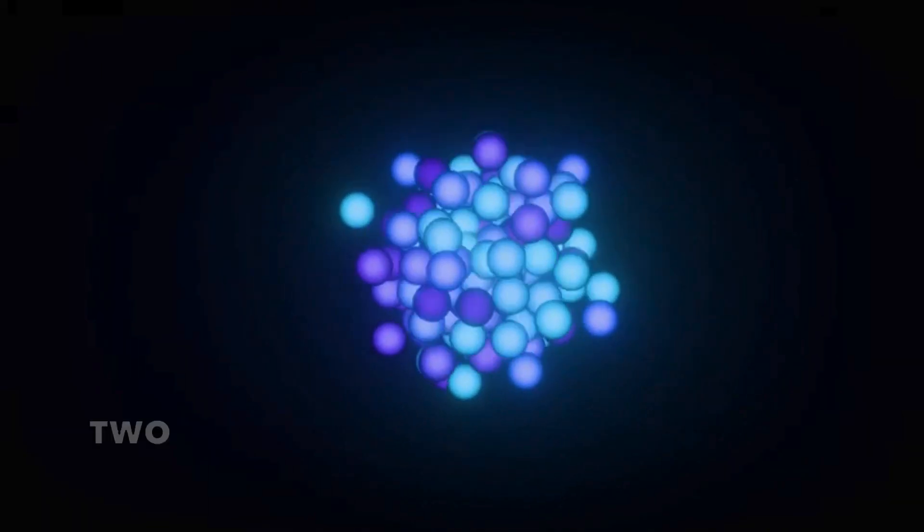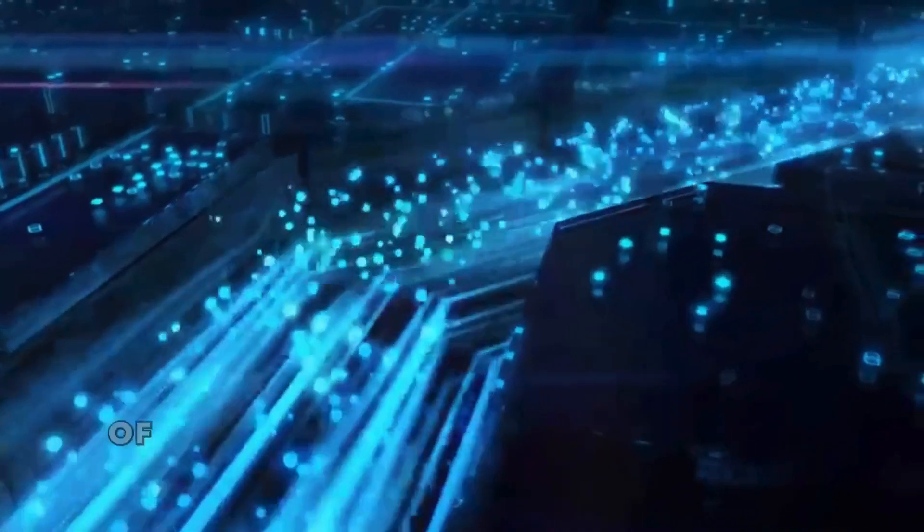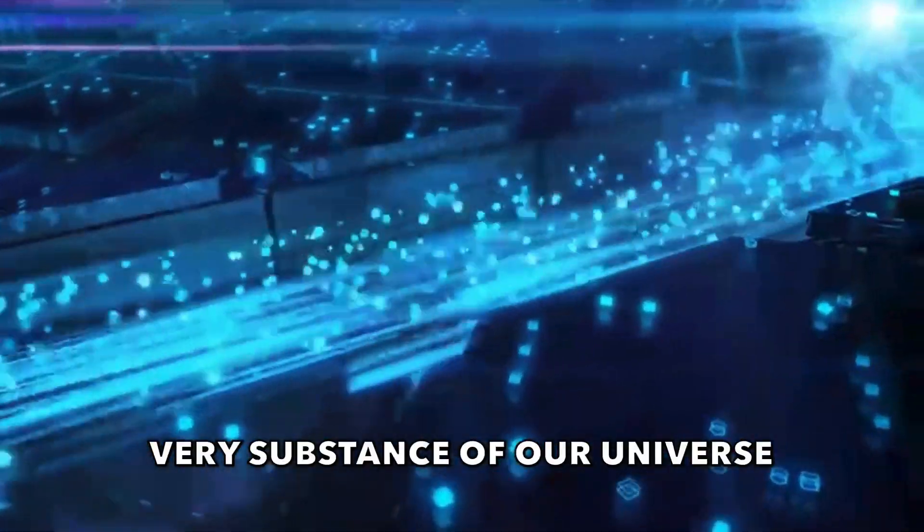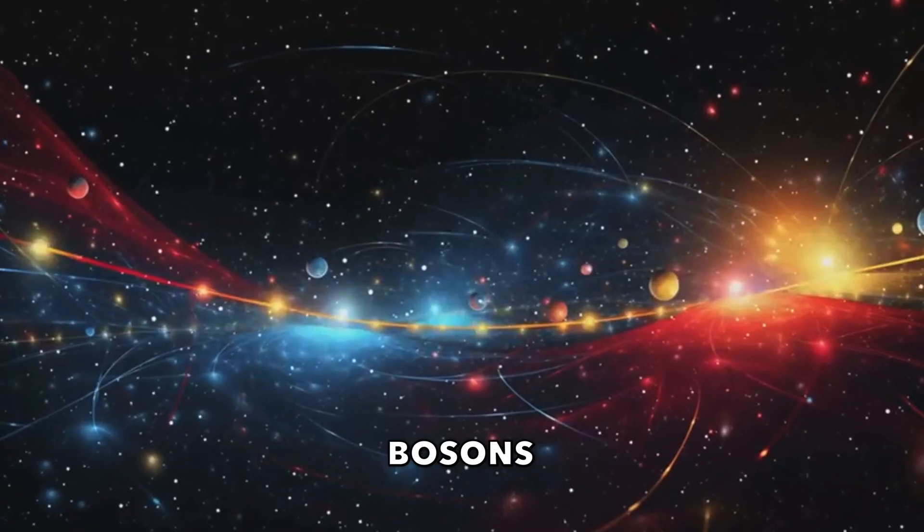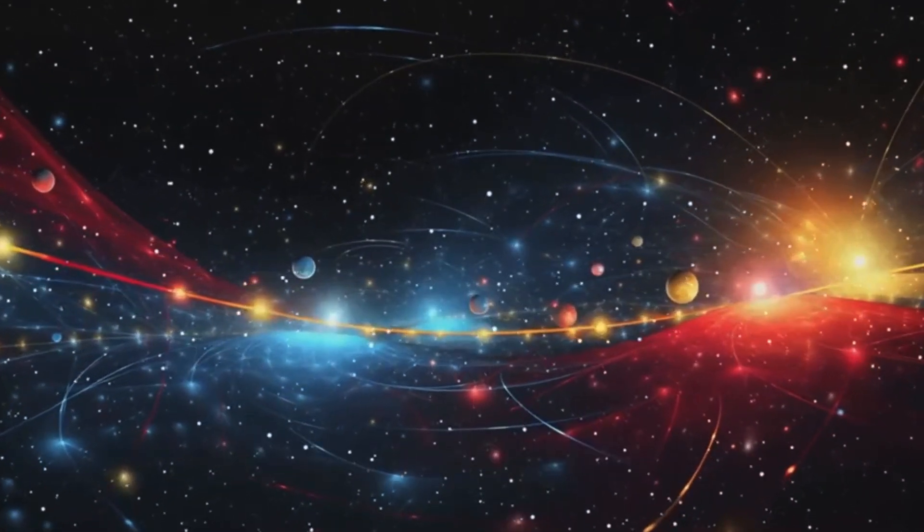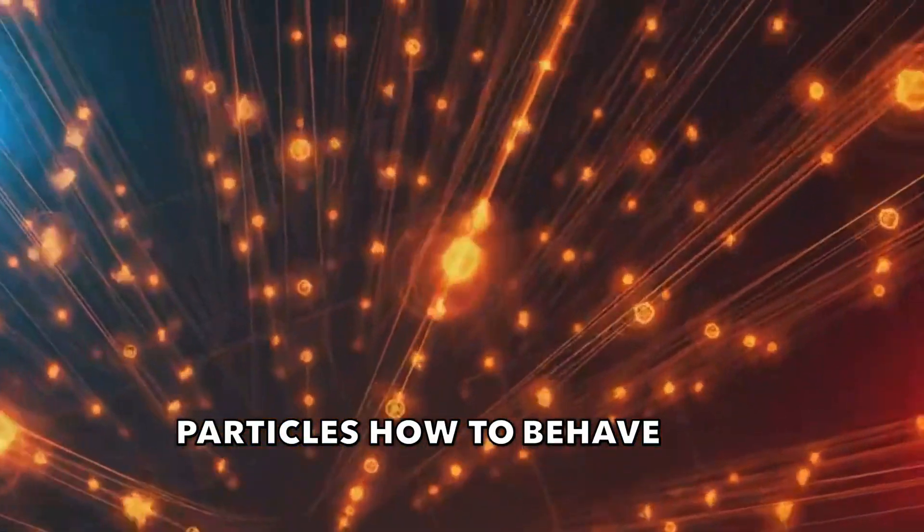At the heart of this model are two main types of particles, fermions and bosons. Think of fermions as the matter particles, the very substance of our universe. Bosons, on the other hand, are the force carriers. They are the messengers that tell other particles how to behave and interact.